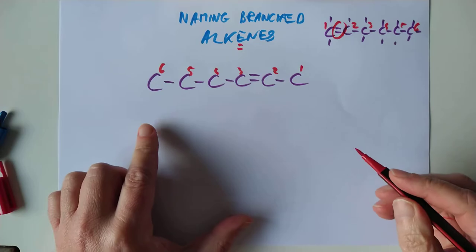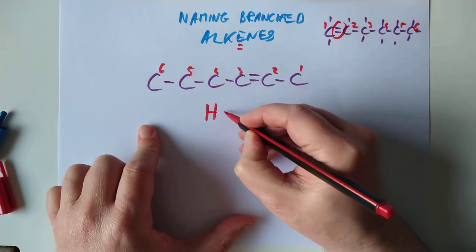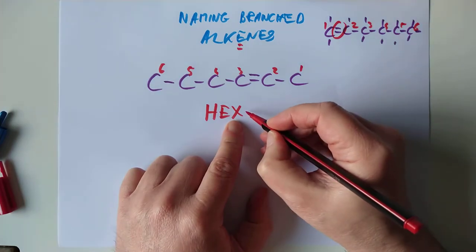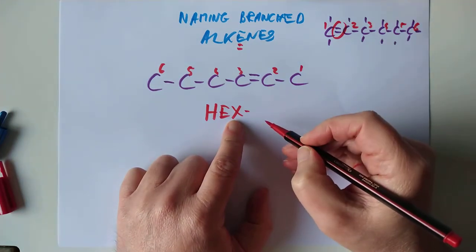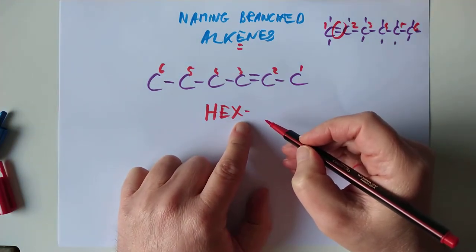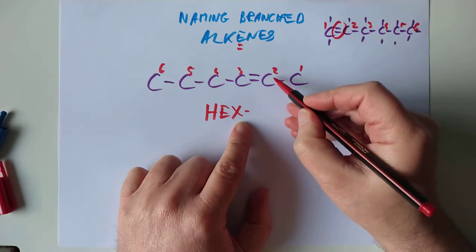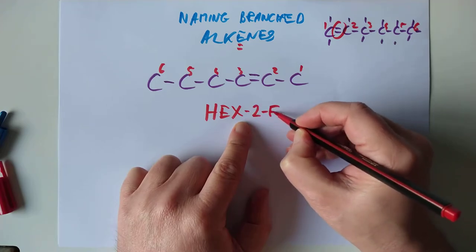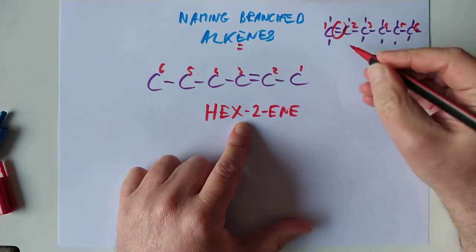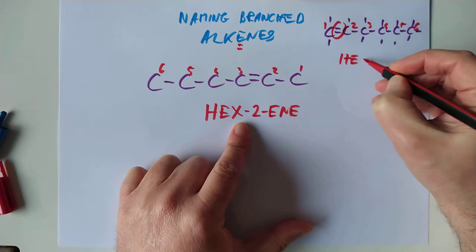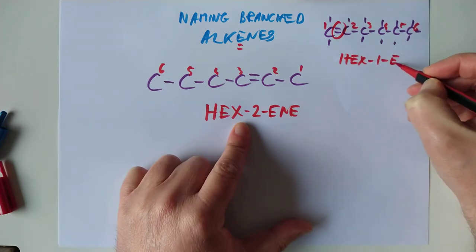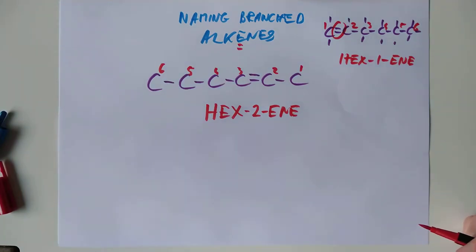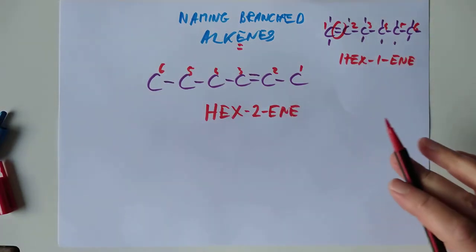And we need to improve on the name of just hexene. I think what we should do is call it hex for six carbons. And then a dash. And then we should tell the reader where the double bond starts. In other words, which carbon does the double bond start at? So this one here is hex-2-ene. And this one here is hex-1-ene. And that instantly solves our problems on whereabouts is the double bond in that chain?